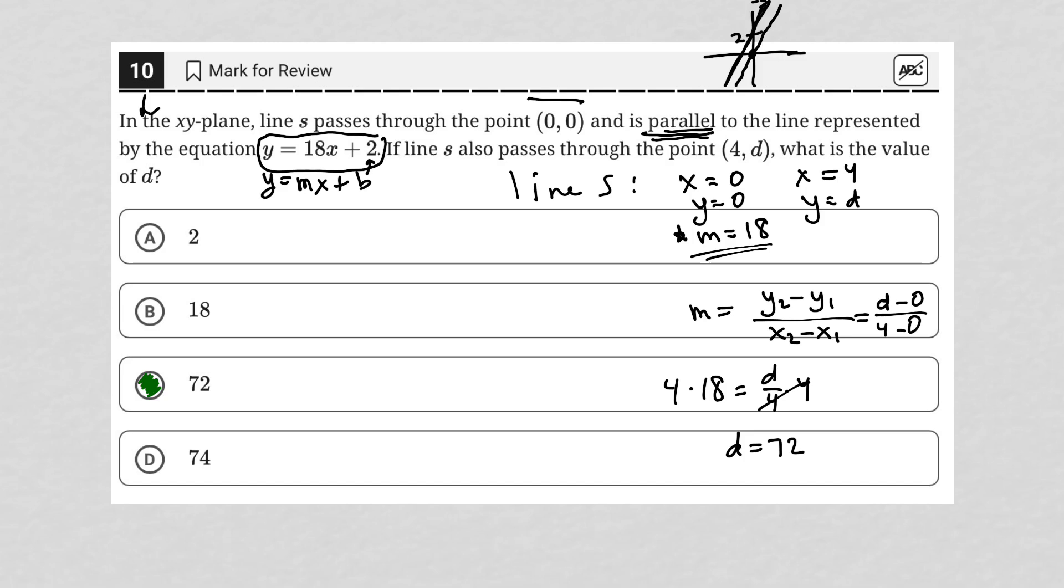What's valuable here is the connection between parallel lines and the fact that we're provided with the slope of this equation, which means the slope of line s is the same as the provided equation's slope of 18. We have x₂ and x₁, and we have y₂ and y₁, so we have all that we need to solve this question.